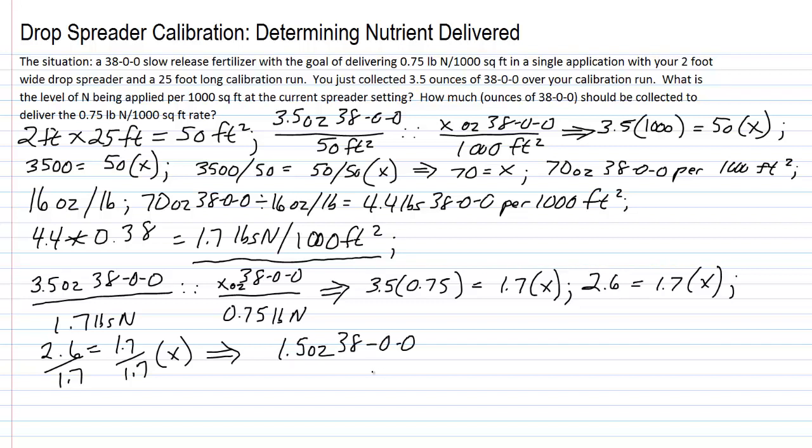That's the answer to our second part of this question. We would adjust our spreader settings in this calibration run using that same spreader in a 25 foot length until we collect 1.5 ounces of 38-0-0, and that is going to be delivering three quarters of a pound of nitrogen per thousand square feet.